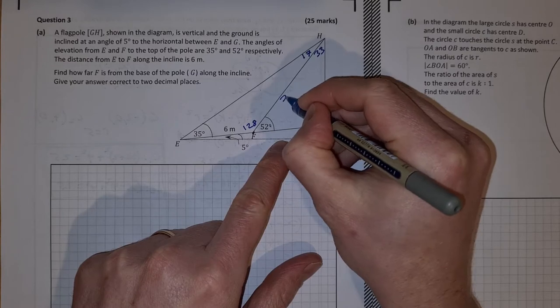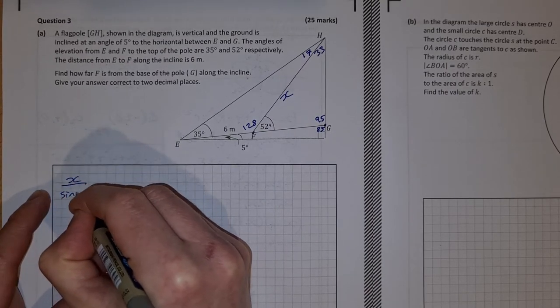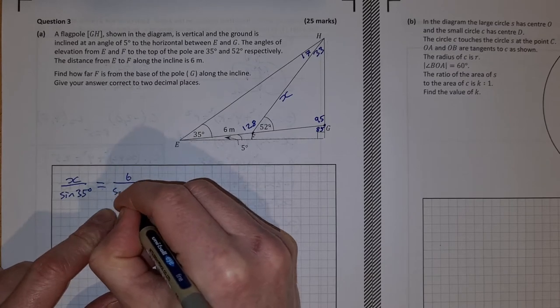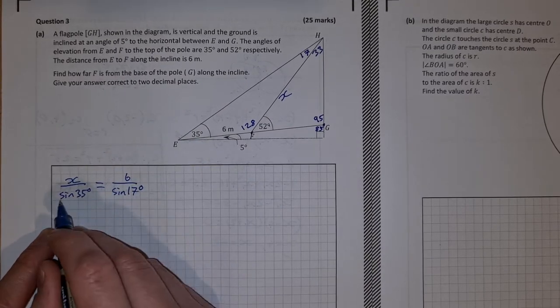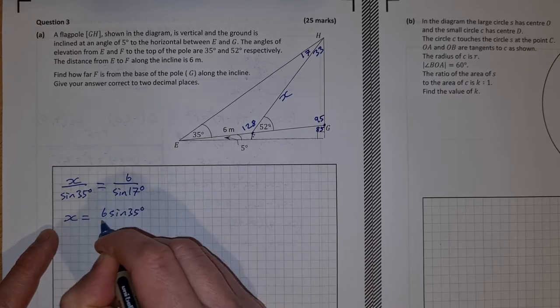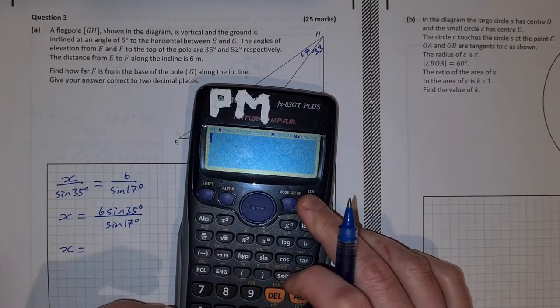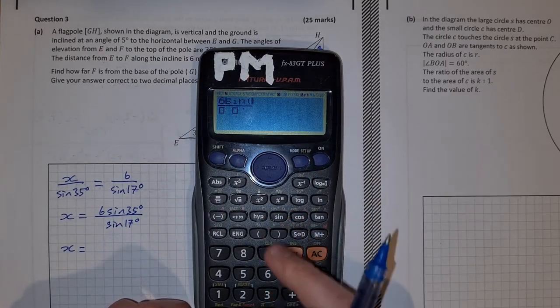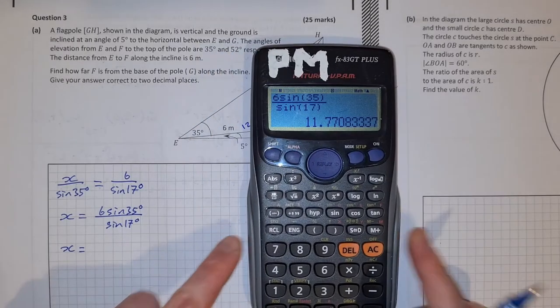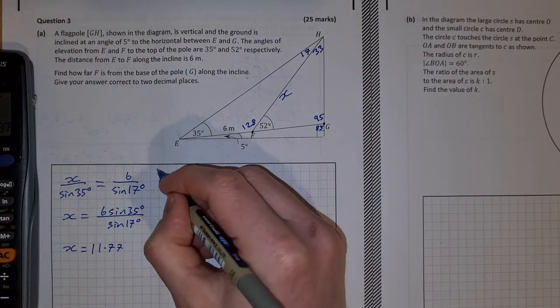So if I call this X and if I do the sine rule, it'll be X over sine 35 degrees is equal to 6 over sine 17. Then if I want to find X, I just multiply across by sine 35. So X is equal to 6 sine 35 degrees over sine 17 degrees. So X is equal to 6 sine 35 over sine 17, so that's 11.77.